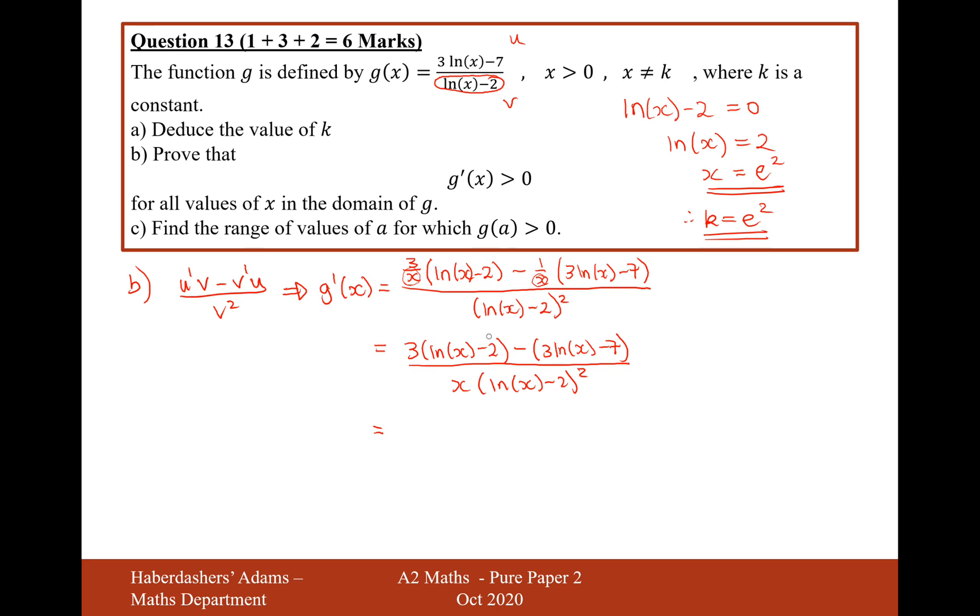Let's now simplify what we've got here, expand the brackets on the numerator. So 3 ln(x) minus 3 ln(x), the ln(x)'s will cancel out. And then we'll have minus 6 and then minus minus 7. So that will end us just up with a 1 over x ln(x) minus 2 squared.